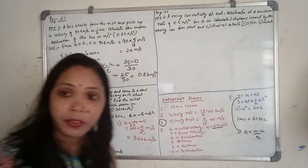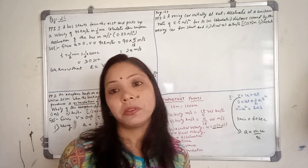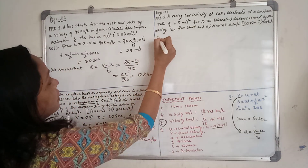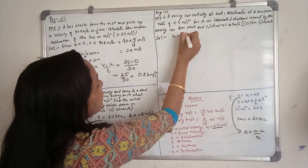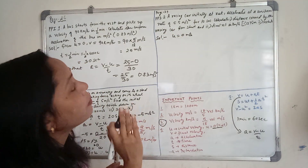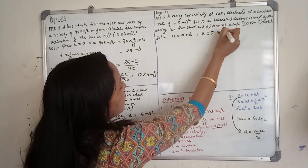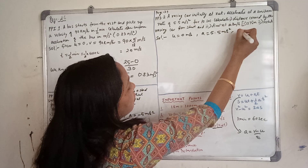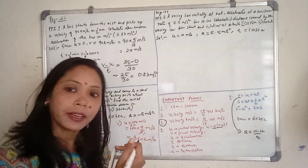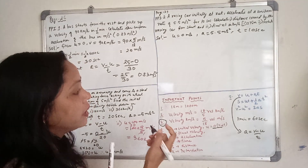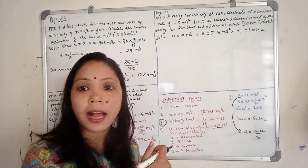Page number 27, practice problem number 3 — again I am discussing part 2 and part 1 you try yourself. A racing car initially at rest — so initial velocity U equals 0 — accelerates at a uniform rate of A equals 5.5 meters per second squared for T equals 10 seconds. Calculate the distance covered and the final velocity in kilometers per hour.